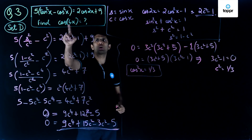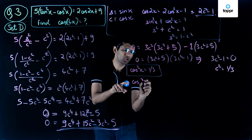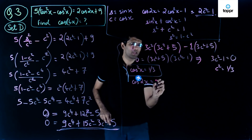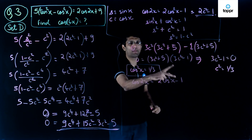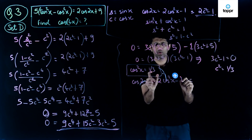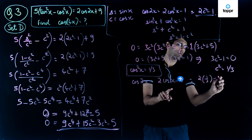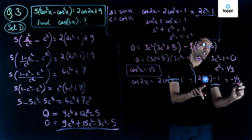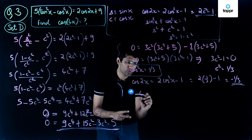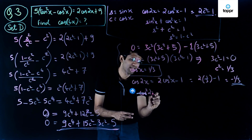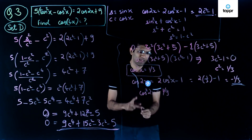We have to find cos of 4x. First, cos of 2x equals 2 cos squared x minus 1 by the standard trigonometric identity. Substituting cos squared x equals 1 by 3, we get 2 times 1 by 3 minus 1, which gives minus 1 upon 3. So cos of 2x equals minus 1 by 3. Therefore cos squared of 2x equals minus 1 by 3 squared, which is 1 by 9.